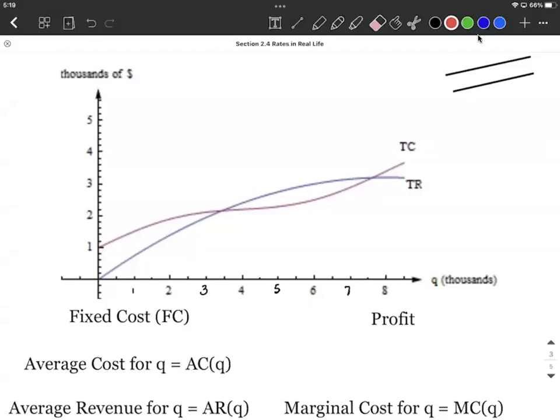Okay, we're given a graph here and this graph represents our total cost with the red curve and our total revenue with this blue curve. Let's just talk about graphically what some of these different concepts look like on a graph and sort of how to read it. It's not going to be the biggest thing that we do in this section, but let's talk it through real quick.